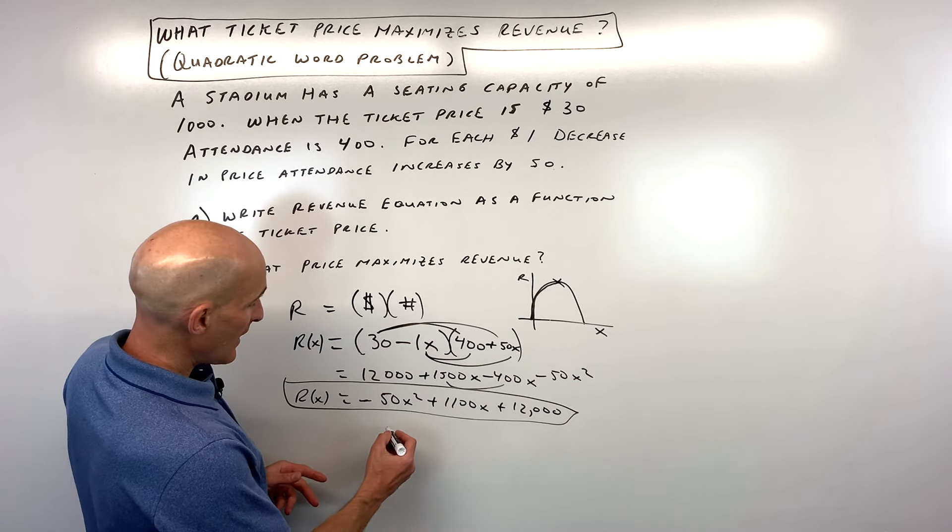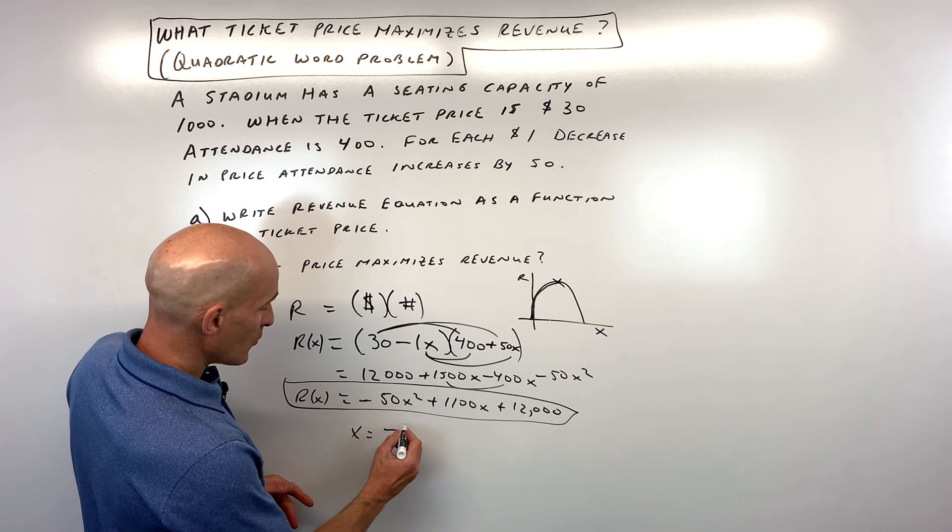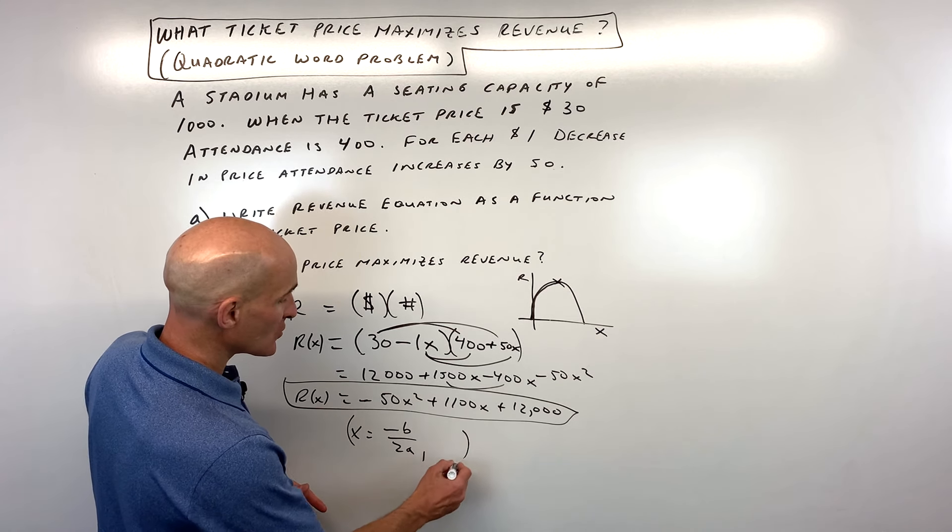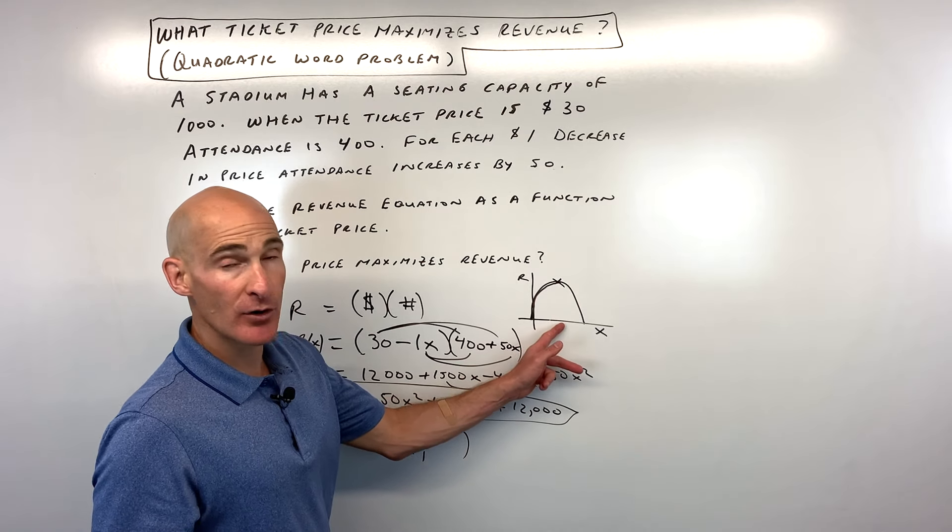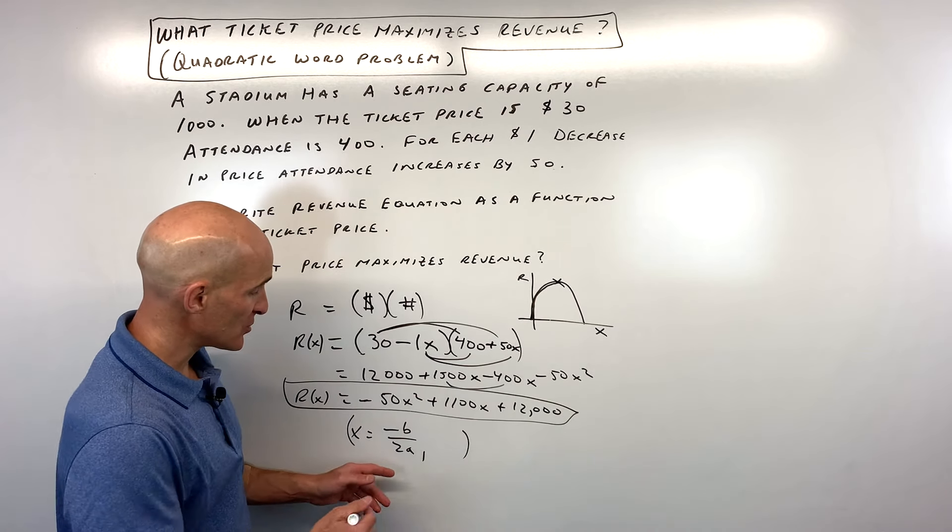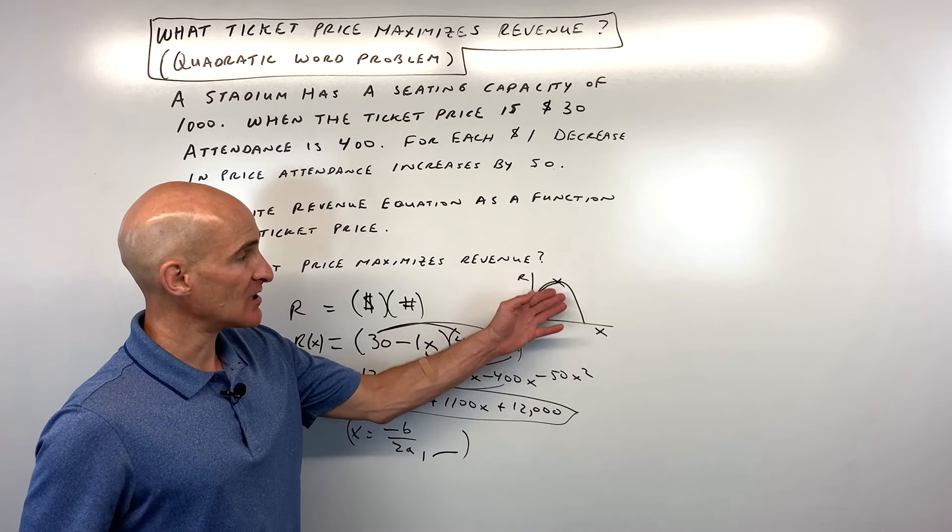And you know the formula for finding the vertex, x equals negative b over 2a. That'll give us our x coordinate. And that would represent the number of one dollar price decreases. If we solve for the y coordinate that's going to give us our revenue.